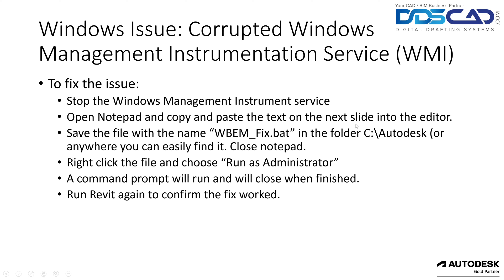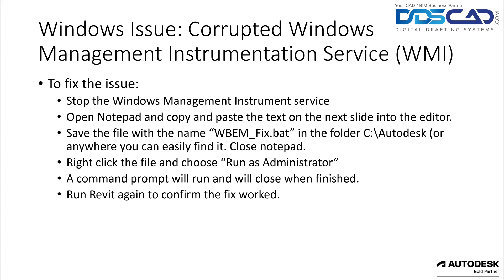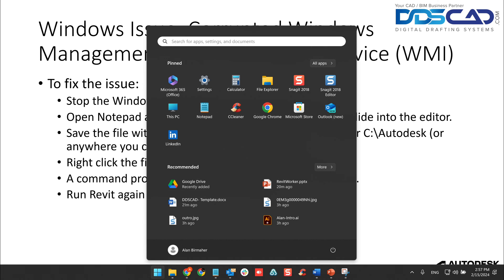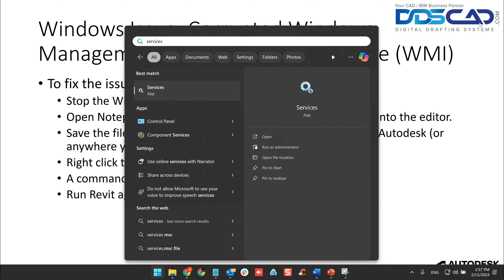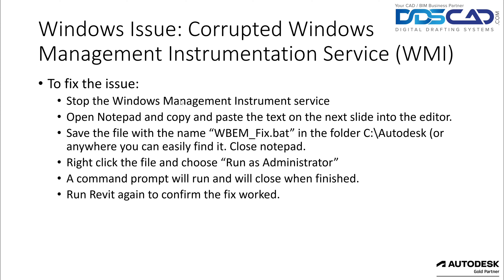So how do we fix this? To correct this issue, we're going to take a couple of steps. The first step is to stop the Windows Management Instrumentation service. Click your Windows key on the keyboard and type in 'services.' It is important to run the Services application as an admin — you can do that either by clicking 'Run as admin' or by right-clicking on Services and clicking 'Run as administrator.' You're going to be asked to enter your administrator information.